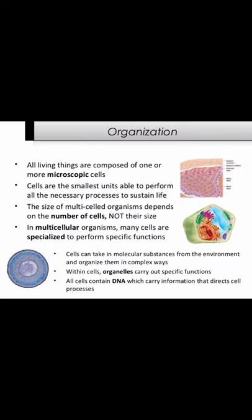Movement also occurs inside organisms — within organs, tissues, and cells: fluids transported up and down plant stems, molecules move within and between cells, food moved through the intestines. Organization: living things are composed of one or more cells. Cells are the smallest units able to perform all the necessary processes to sustain life. The size of multi-celled organisms depends on the number of cells, not their size. In multicellular organisms, many cells are specialized to perform specific functions. Cells can take in molecular substances from the environment and organize them in complex ways; within cells, organelles carry out specific functions, and cells contain DNA which directs cell processes.